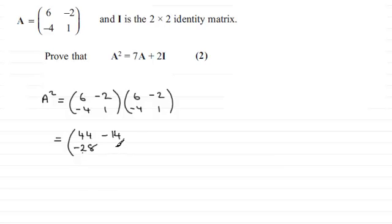And for the last one, bottom row [-4, 1] times the end column [-2, 1]. -4 × -2 is 8, and 1 × 1 is 1. 8 + 1 gives us 9. So that's the left-hand side.